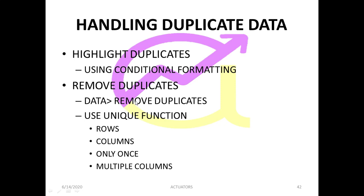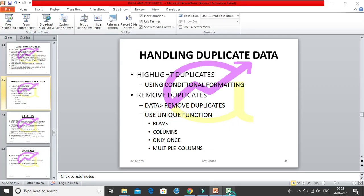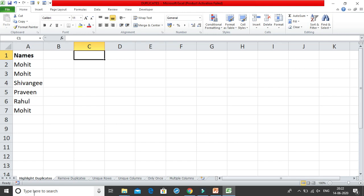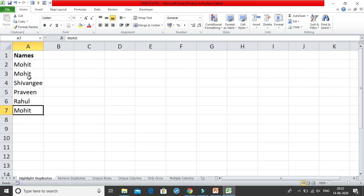The UNIQUE function is not currently available in the desktop version of Microsoft Excel. What we are going to do is use Microsoft's online version of Excel to look for this function. So moving straight into the spreadsheet — the very first thing is to highlight the duplicates. As you can see, I have a few repetitions here, and I want to highlight these repetitions using conditional formatting.